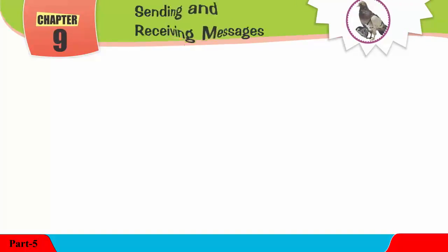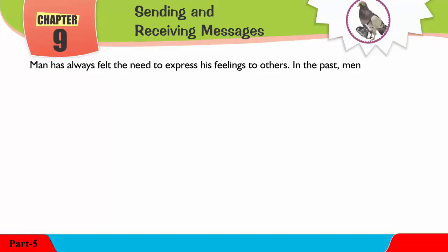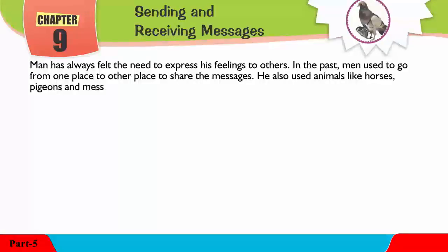Chapter 9: Sending and Receiving Messages. Man has always felt the need to express his feelings to others. In the past, man used to go from one place to other place to share the messages. He also used animals like horses, pigeons, and messengers to share the messages.